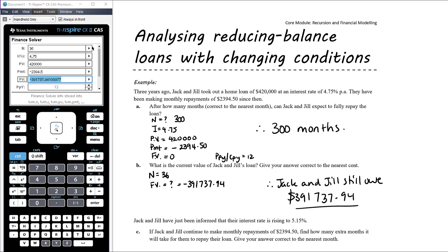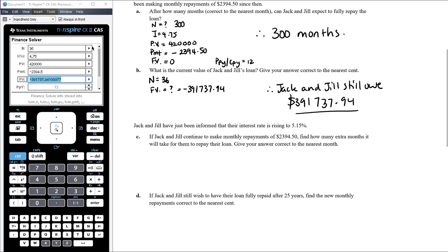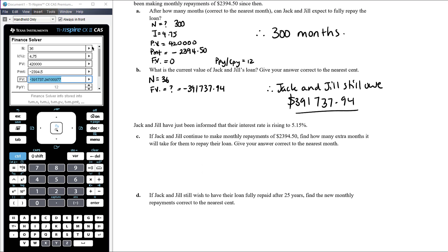Okay, so at this point Jack and Jill have just been informed that their interest rate is rising to 5.15%. Okay, so the interest rate is going up from 4.75% that they've paid over the first three years to 5.15%. Okay, part C, if Jack and Jill continue to make monthly repayments of $2,394.50, find how many extra months it will take for them to repay their loan. Okay, so what changes here? So we now want to know again it's find how many months, so n is going to be the unknown quantity.